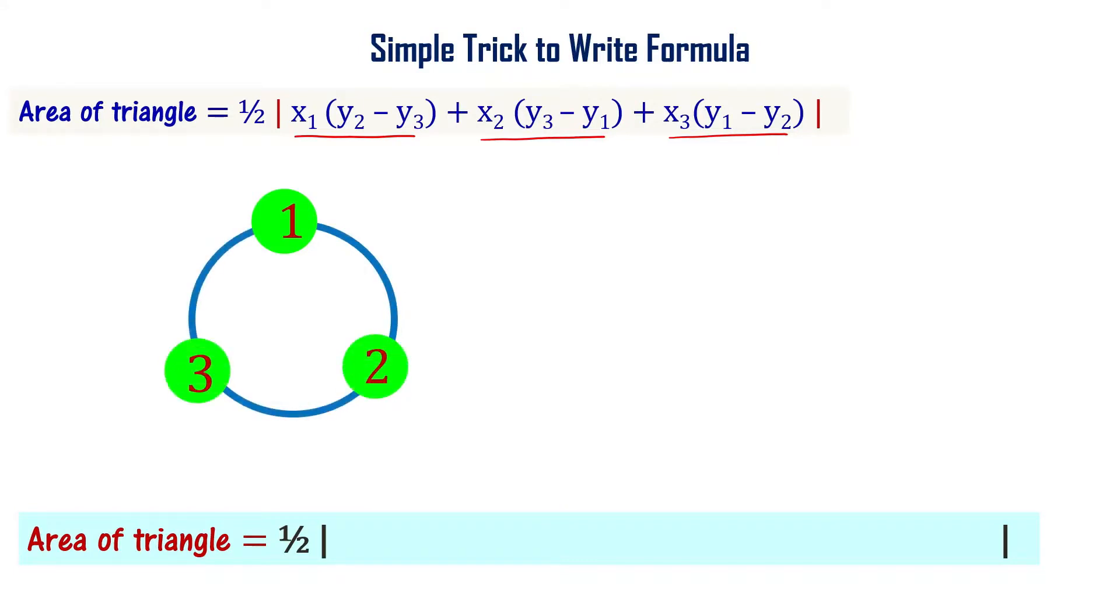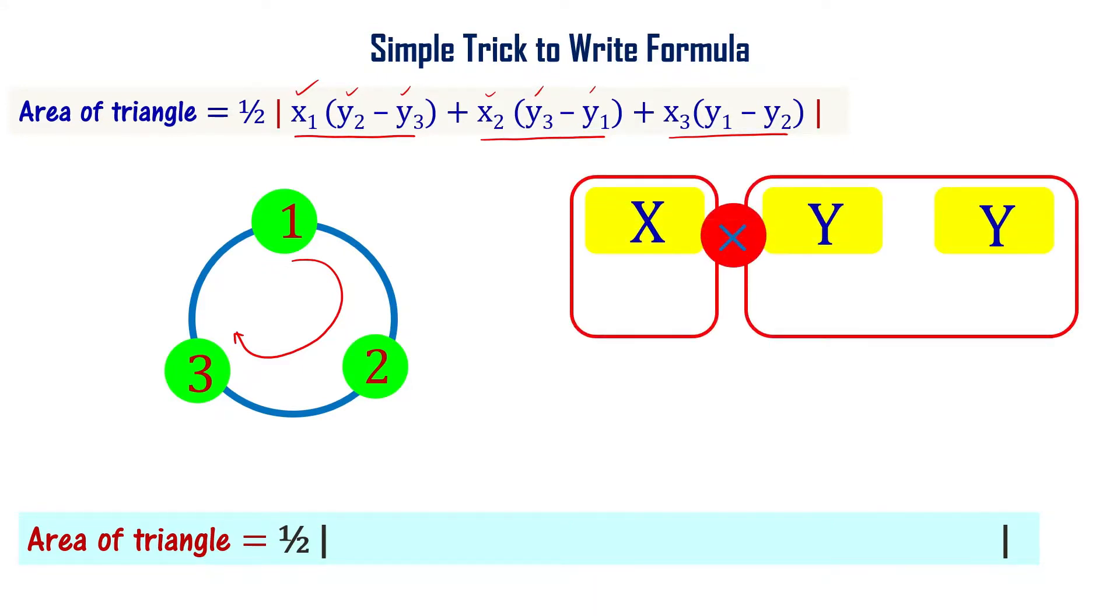If we can do this: clockwise, number as 1, 2, 3. Then write x, y, y with a minus symbol between the y's. I'll start with number 1. Starting with x₁, then rotating clockwise.